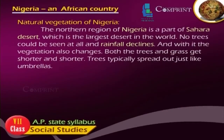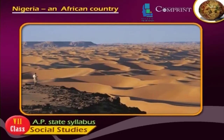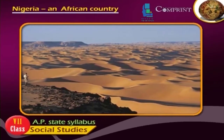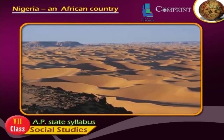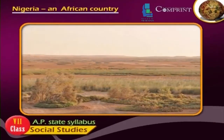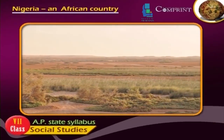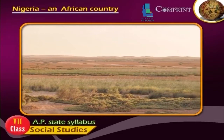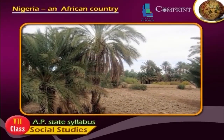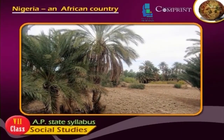The northern region of Nigeria is a part of the Sahara Desert, which is the largest desert in the world. No trees could be seen at all and rainfall declines. With it, the vegetation also changes — both the trees and grass get shorter and shorter. Trees typically spread out just like umbrellas.